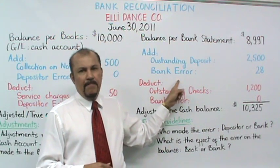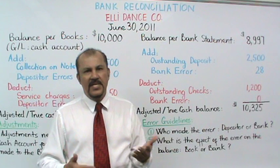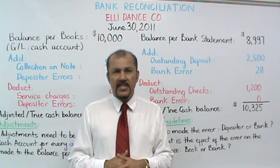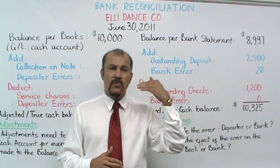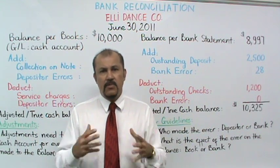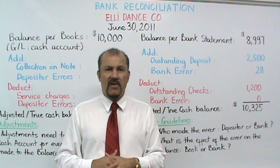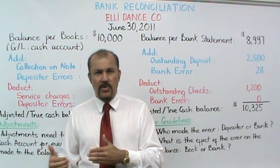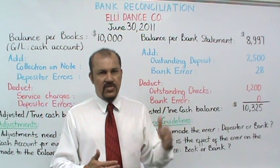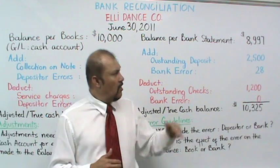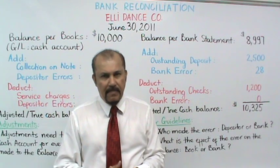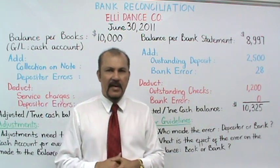Next, we see a bank error of $28 that's being added. As part of the reconciliation, we found that the bank had made an error where they processed a check belonging to another company, Ellis Manufacturing, against L.E. Dance Company's account. In other words, they had taken out $28 from L.E.'s bank account for a check that belonged to Ellis Manufacturing. The bank will correct that error next month, but as of this month, we add the $28 back to our bank statement balance to bring it in line with our book balance.